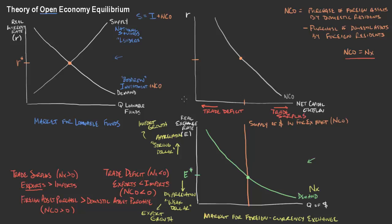We've been discussing the theory of open economy equilibrium and we've gone through a lot of details understanding how the market for the real interest rate, the market for loanable funds, the market determining the real exchange rate, and the market for foreign currency exchange are connected. The key variables connecting all of these markets are savings, investment, net capital outflows, and net exports. We've also been thinking about how terms like trade deficit, trade surplus, appreciation, and depreciation are all connected.